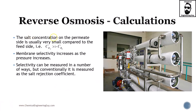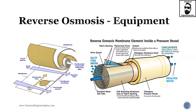The salt concentration on the permeate side is usually very small compared to the feed side, so expect a considerably high change in concentration across the membrane. Membrane selectivity increases as pressure increases. Selectivity is typically measured by the salt rejection coefficient, though the details of that calculation are beyond the scope of this discussion.